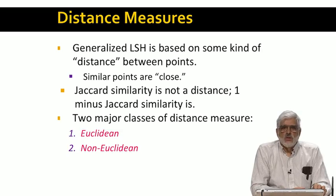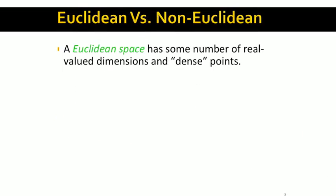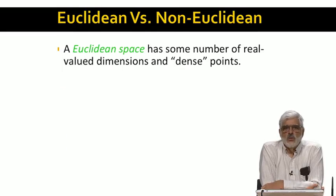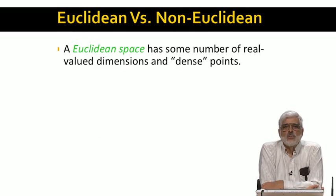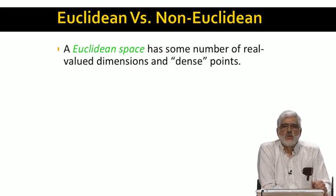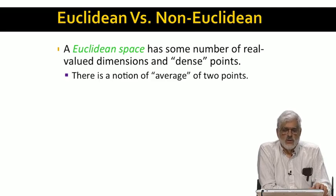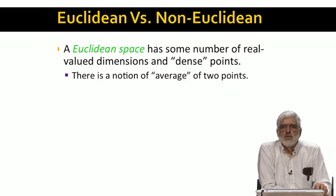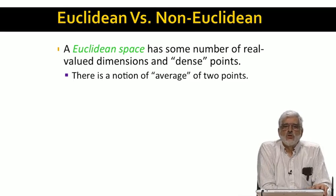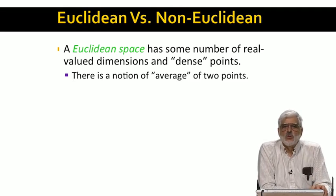We see two different kinds of distance measures: Euclidean and non-Euclidean. Euclidean spaces have dimensions, and a real number locates each point along each dimension. The ordinary two or three dimensional Euclidean spaces are the most common examples, but Euclidean spaces can have any number of dimensions. An important property of Euclidean spaces is that they are dense — that is, given any two points, you can find their average, and it will be a point in the space.